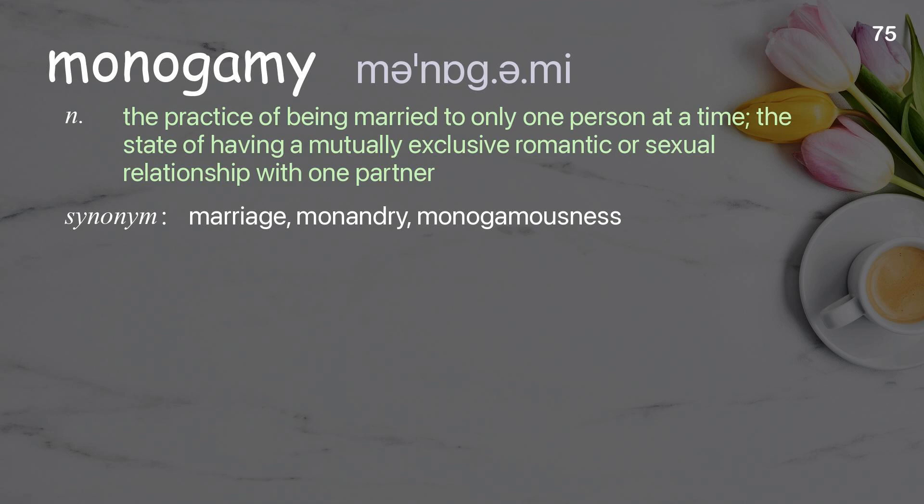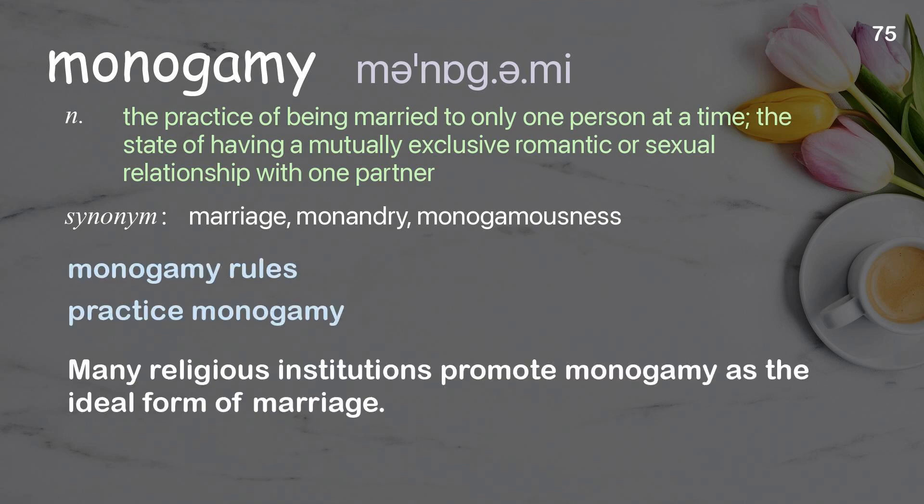Monogamy: the practice of being married to only one person at a time; the state of having a mutually exclusive romantic or sexual relationship with one partner. Examples: monogamy rules, practice monogamy. Many religious institutions promote monogamy as the ideal form of marriage.